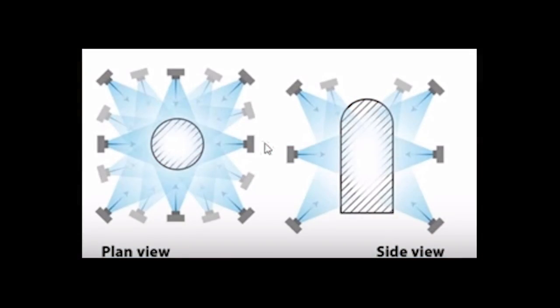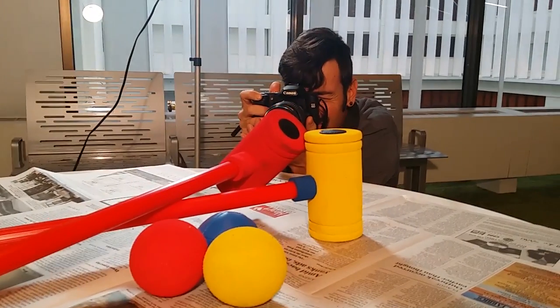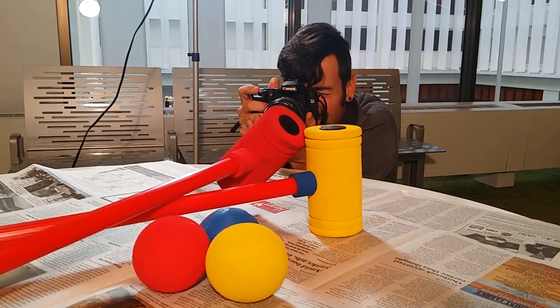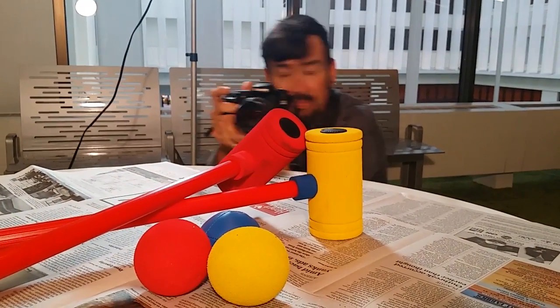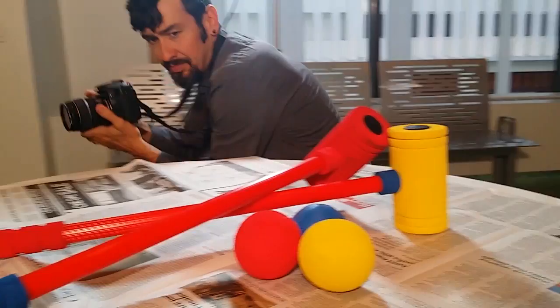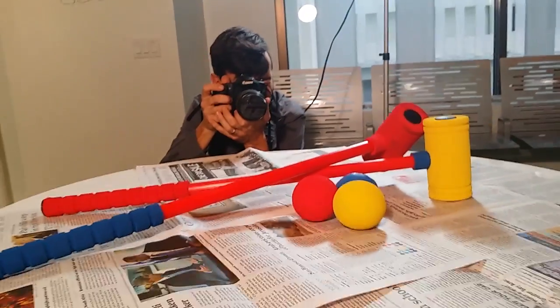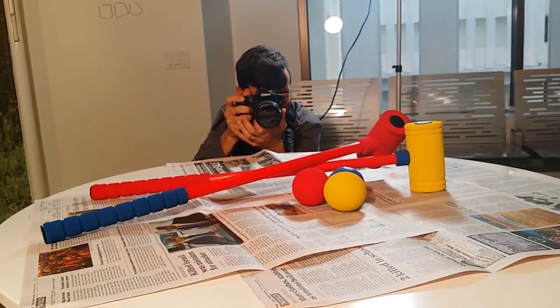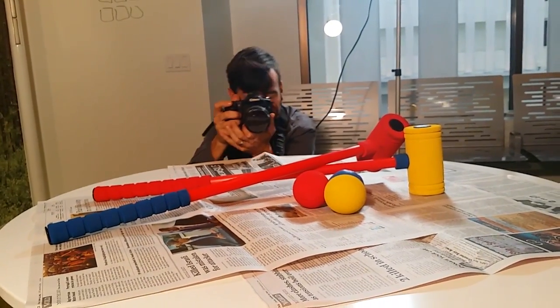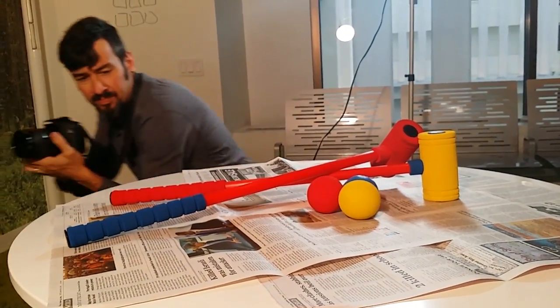It might help to think of the object as being surrounded by a large sphere dotted with points all over its surface — these points are the potential camera angles. Luckily, there's flexibility and there's no need for the angles to be precise, as long as there's sufficient coverage. In the next section, we will look at how the photos turned out and upload them into Memento.